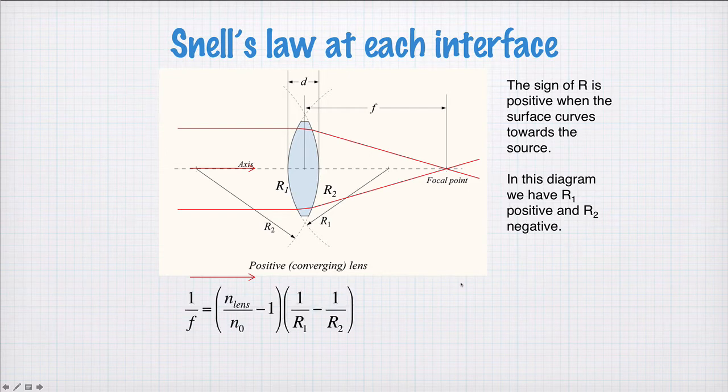The equation that we need is 1 on f, f the focal length, that's where we have plane waves coming in this side, all the rays are parallel, they'll all meet up at the focal length over here. 1 on f is equal to the refractive index of the lens divided by the refractive index of the material around the lens. If that's air or vacuum, that would just be n divided by 1. We have the ratio of these refractive indices minus 1, and that's multiplied by the difference on the inverse of the radii of curvature.